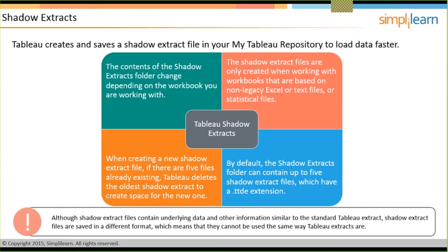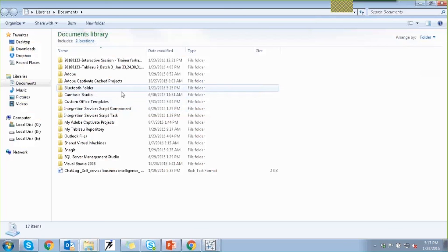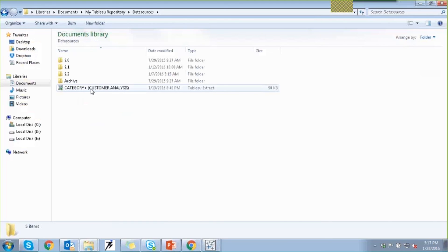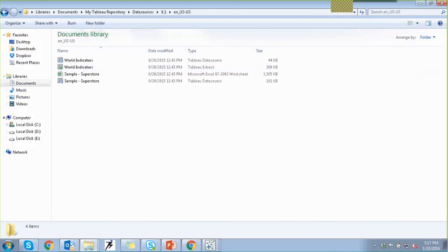To quicken the process of loading data, Tableau automatically creates and saves a shadow extract file in your repository. Other than you manually creating an extract, it takes the content and saves it as a shadow extract in your repository file while you're working on the workbook. When working with legacy, non-legacy, Excel, text files, or statistical files, it automatically creates a shadow extract file in your repository. In your repository folder — under My Documents in Data Sources — you will be able to see this shadow extract that's been created for you to make use of in the background.